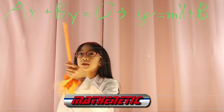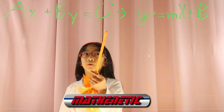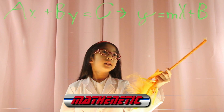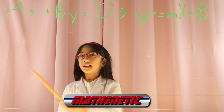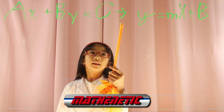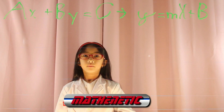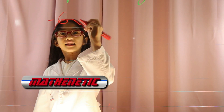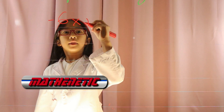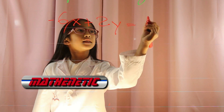ax plus by equals c — this is standard form. y equals mx plus b is y-intercept form. Today's lesson is how to convert standard form into y-intercept form. Today's equation is negative 6x plus 2y equals 8.